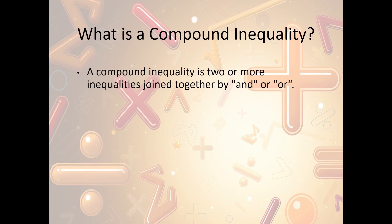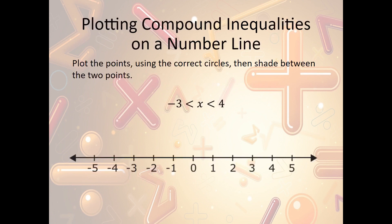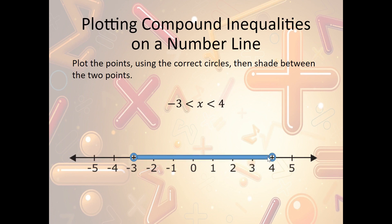Now, what is a compound inequality? A compound inequality is two or more inequalities joined together by 'and' or 'or.' It looks like this: two is less than or equal to x is less than six. That means x is somewhere between two and six. Because it has the or-equal-to on the left side, it can include two, but it can't include six. For the number line, we plot a point at negative three with an open circle — no extra was added — and an open circle at four. Since x is between those two numbers, we shade everything between them. That's our compound inequality on the number line.